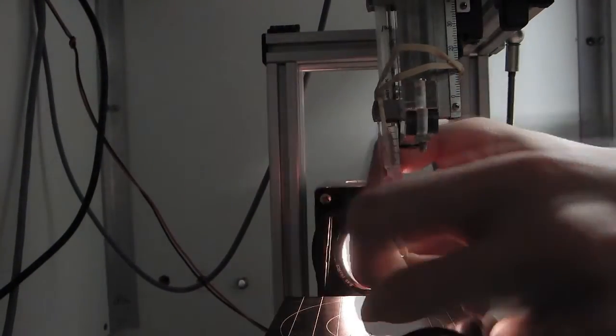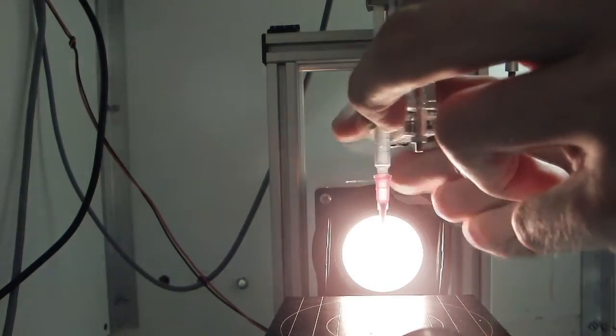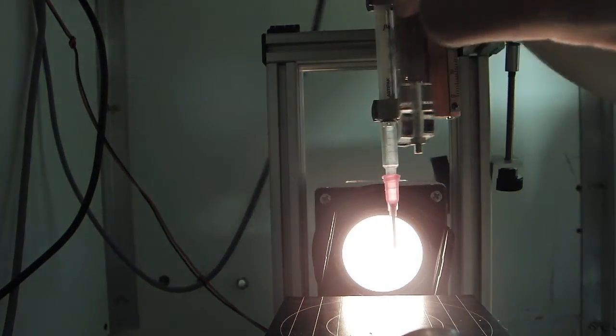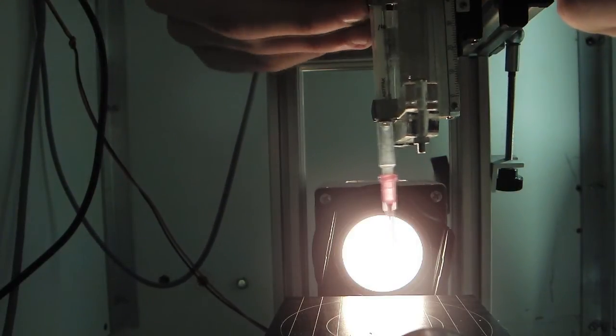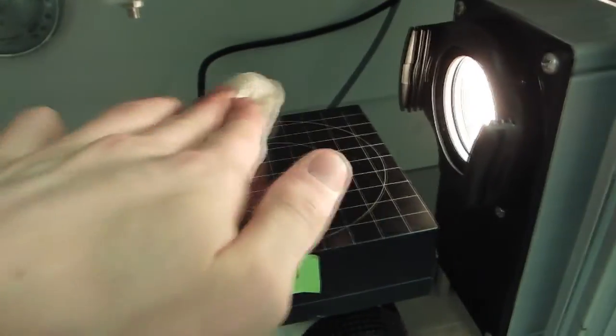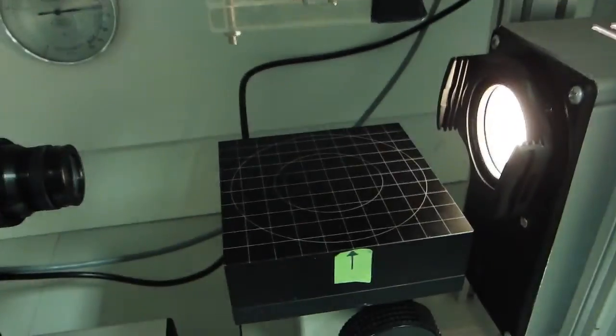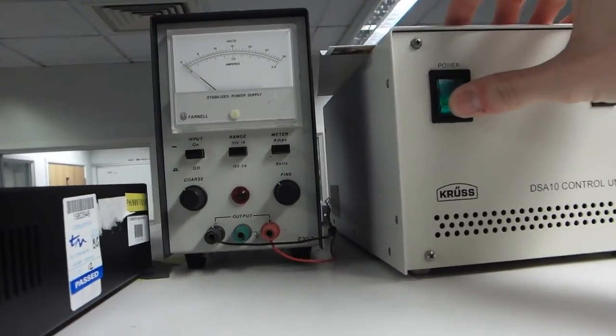Removing the rubber band and undoing the retention screw allows us to remove the syringe. Finally, we wipe down the stage and turn off the power to the backlight and the syringe control unit.